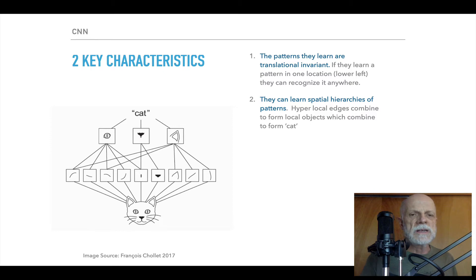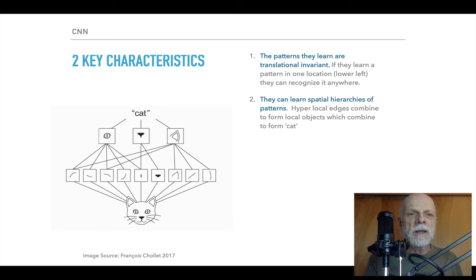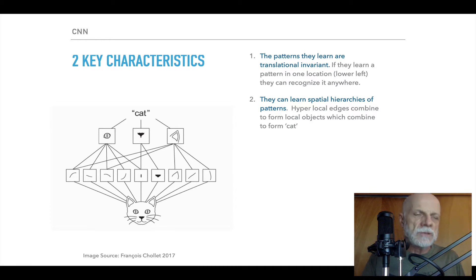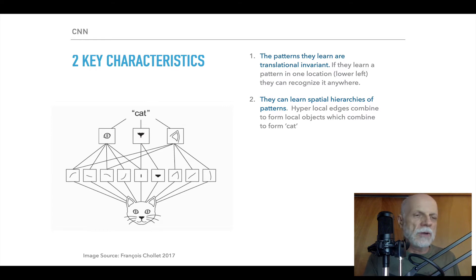The other characteristic is that you can combine these little features or hyper-features, like edge detection, and form the next level up in features like eyes, nose, and ears. These hyperlocal edges combine to form local objects, and those local objects then can form eventually something like a cat or a dog.